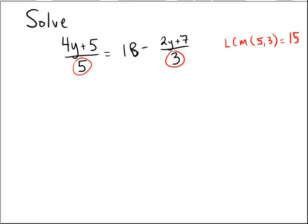On both sides of the equation, I'm going to multiply by the number 15. Notice that when you take 15 times 4y plus 5 over 5, the 15 and the 5 reduce to be a 3. So what's left over is 3 times 4y plus 5.